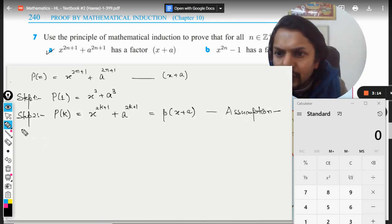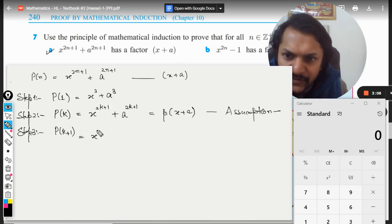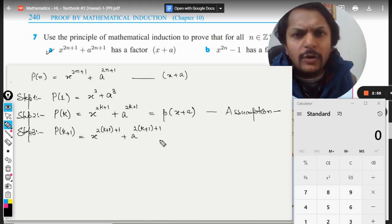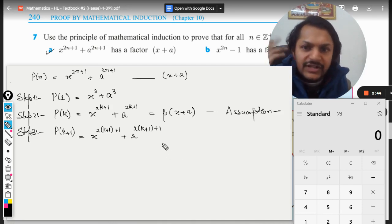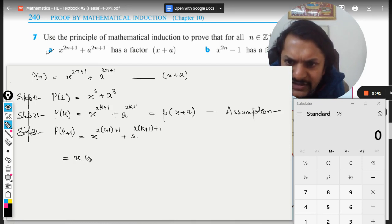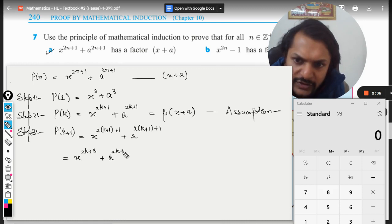Now we move to step number three, when we substitute k+1 here. This term will become twice of (k+1) plus 1, plus a into (k+1) plus 1. Be very particular about your handwriting because it's only algebra, and if even one single mistake we make, the complete question is out of our reach. This thing will become x raised to power 2k+3 plus a raised to power 2k+3.